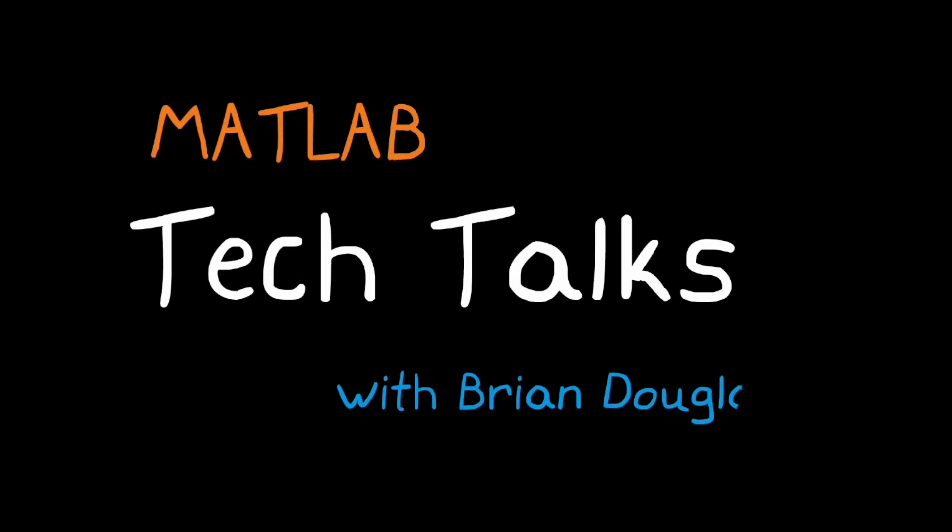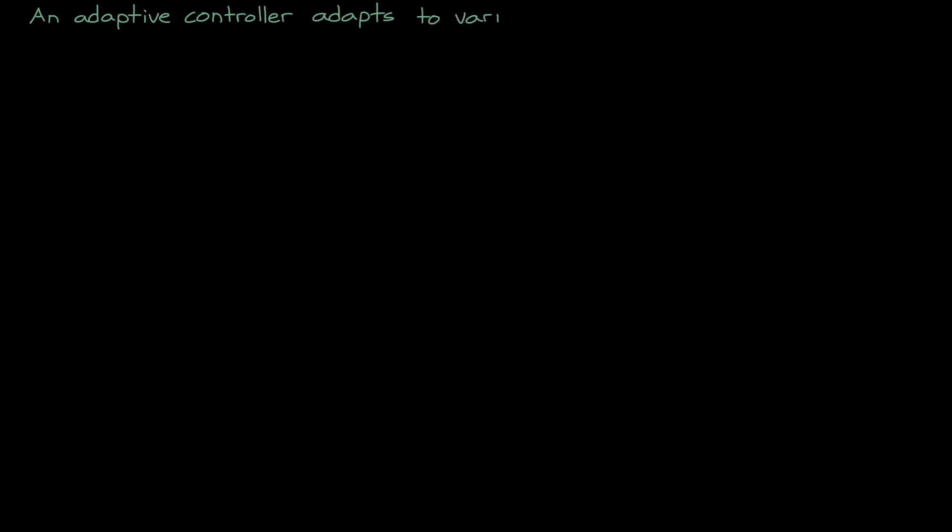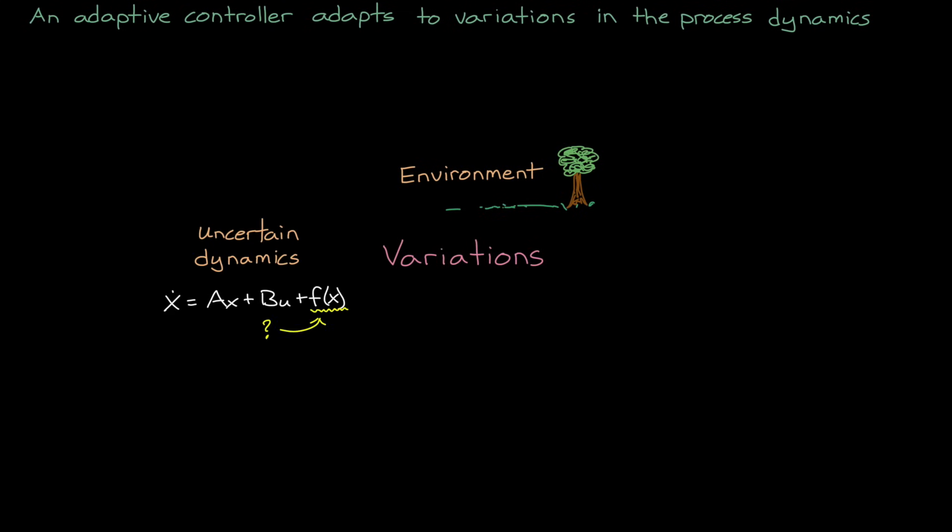I'm Brian, and welcome to a MATLAB Tech Talk. As the name suggests, an adaptive controller adapts to variations in the process dynamics. And these variations could come from a number of places. For instance, the disturbances that come from the environment might change.